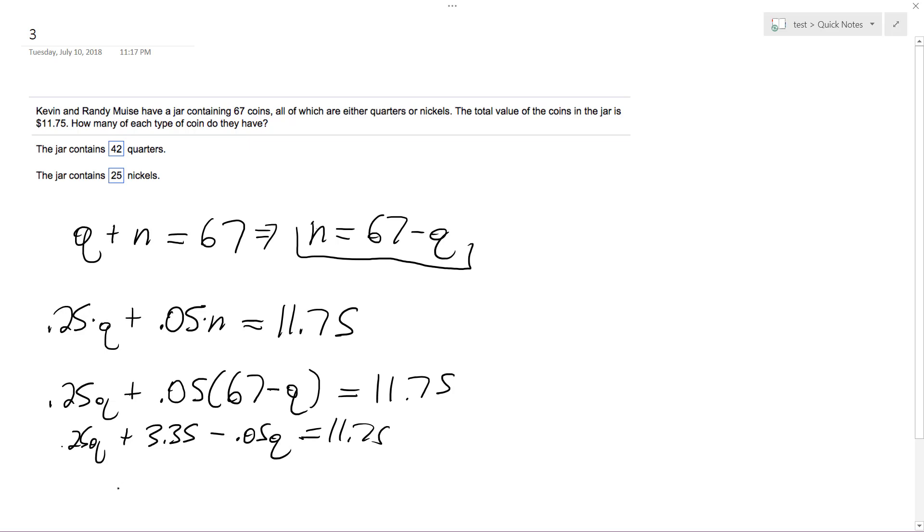Okay, so I'll combine like terms. That gives me 0.20Q. Then I subtract 3.35 from 11.75 and end up with 8.40.